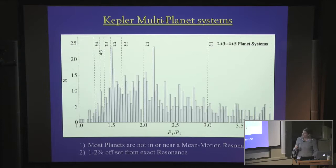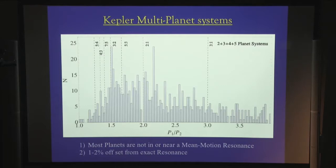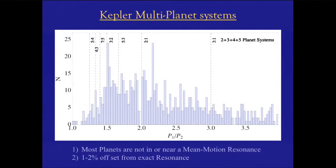This plot takes all the multiple planet systems and takes the ratio of the periods of all the companions, then presents a histogram of that. For comparison, I've drawn lines indicating some of the mean motion resonances of the systems. The first thing you should see is that there doesn't seem to be anything special in general about those locations — planet pairs fall all over the plot. Most planets are not in or near any of these mean motion resonances.